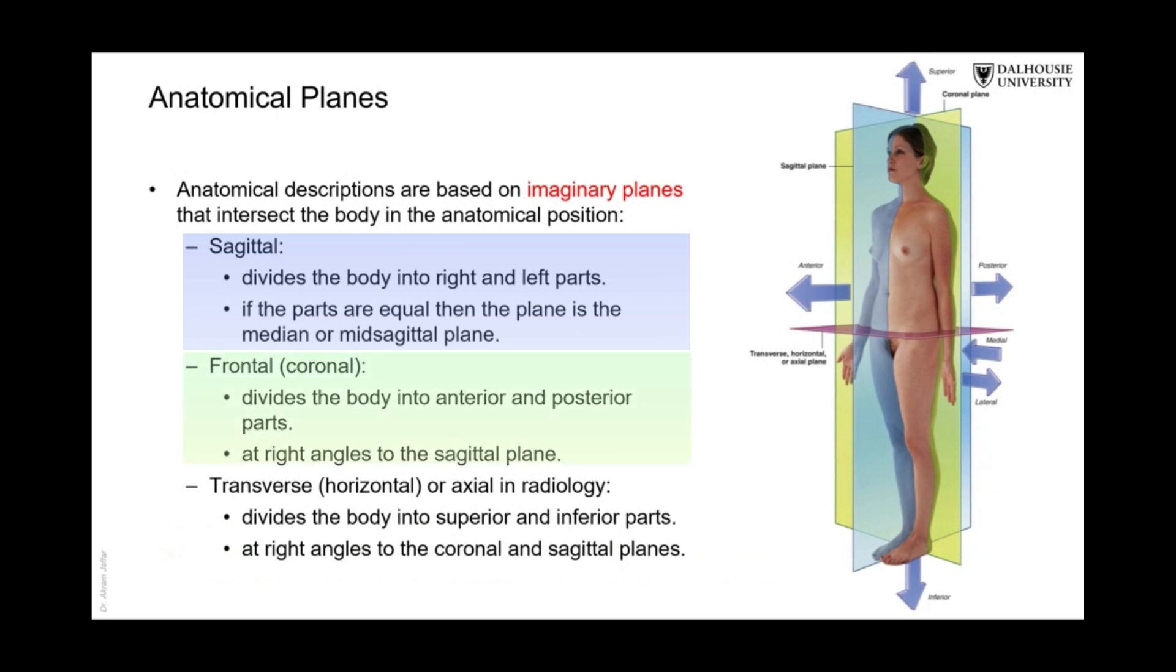And then we have the frontal plane, which is the green one here. You can see it is perpendicular to the sagittal plane. It's also called coronal plane.